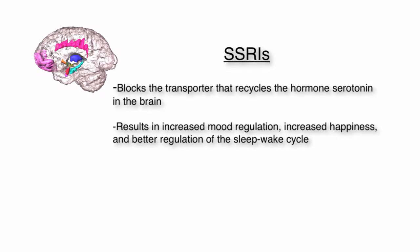One of the most commonly used drugs to treat generalized anxiety disorder are SSRIs. These drugs block the transporter that recycles the hormone serotonin in the brain. By blocking the transporter, it allows serotonin to act in the brain for longer periods of time. A common theory suggests there is a hormonal imbalance in the mesolimbic system, so increasing serotonin results in increased happiness, increased ability to maintain a good mood balance, and better regulation of the sleep-wake cycle.